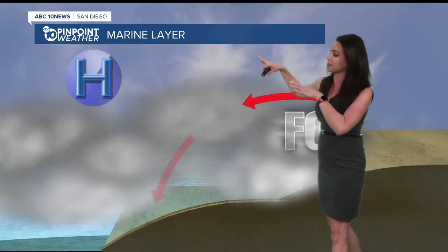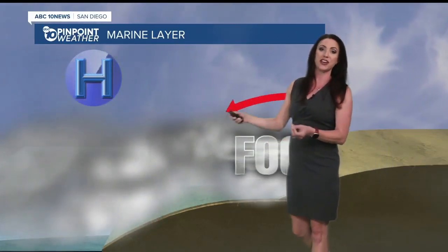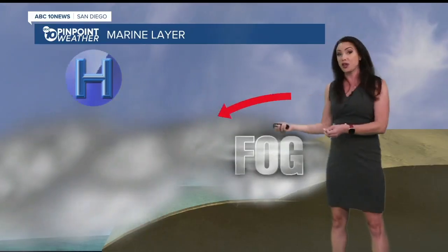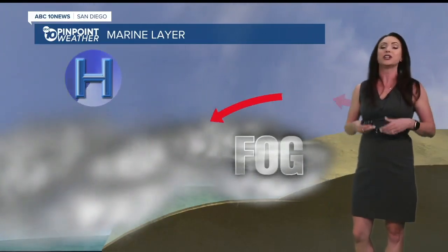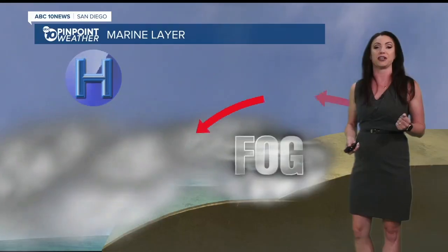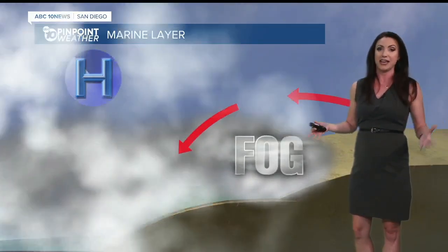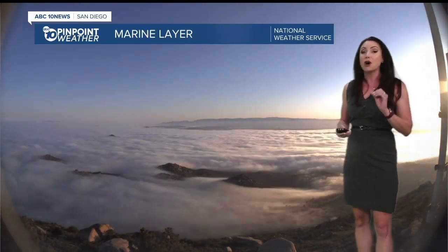A thicker marine layer clears slower as it takes more time for enough warming to occur to evaporate those clouds. Sometimes the clouds get trapped and are just too thick for there to be enough warming. Mixing doesn't happen and overcast skies can last for days. This phenomenon is most pronounced in May and June because the ocean water temperature lags behind the warming of the air overhead, leading to a greater temperature difference and thus a stronger inversion layer.